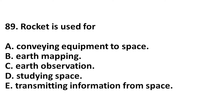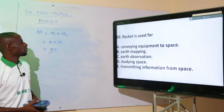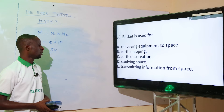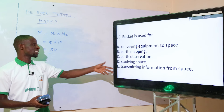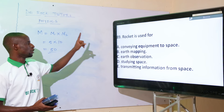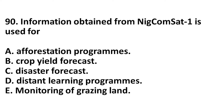Rockets are used for what? Options: A. conveying equipment to space, B. earth mapping, C. earth observation, D. storing space, E. transmitting information from space. Options B, C, D, and E are functions of satellites. Rockets are specifically used for conveying equipment to space. The correct option is option A.